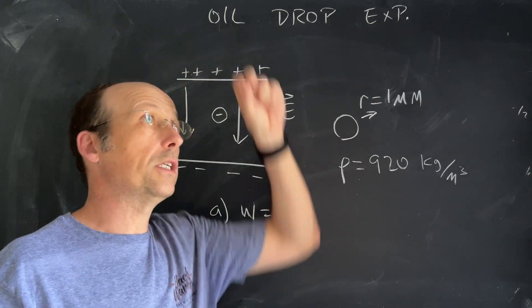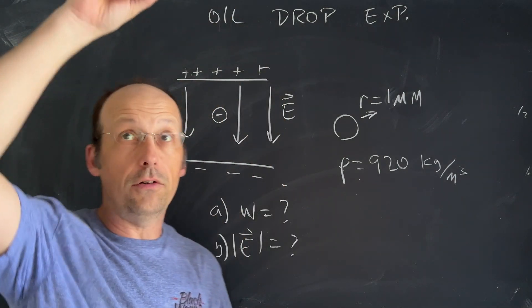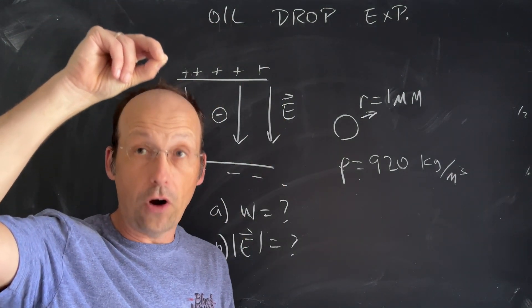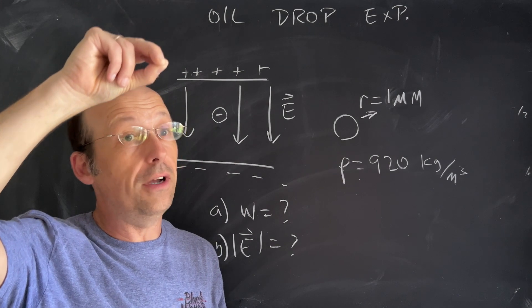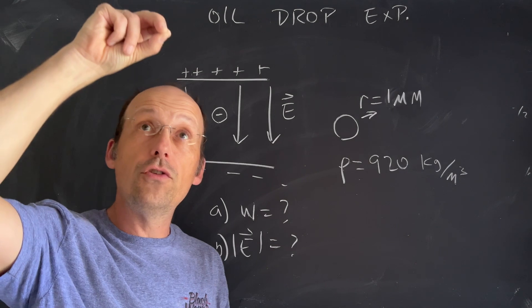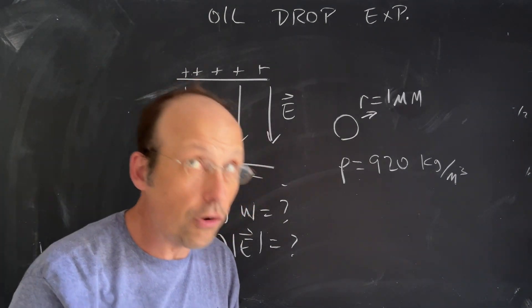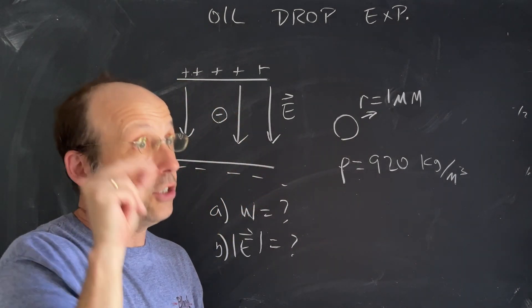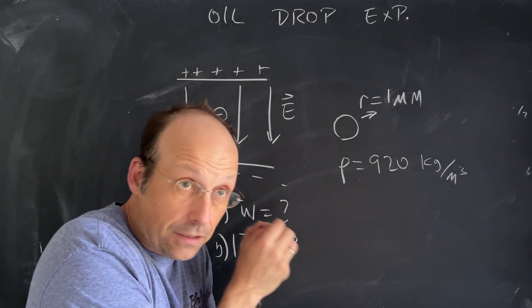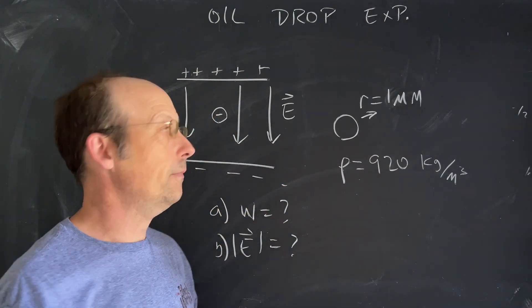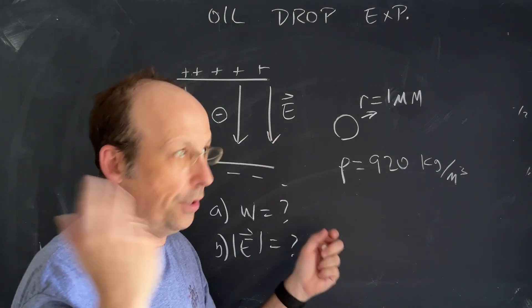What Millikan did was turn off the electric field and watch the oil drop fall. The air resistance would give it a terminal velocity and if you know some things about the shape of the drop and air resistance you can actually determine the size of the drop that way. Well in this case it's just a physics problem so we're gonna do it this way.